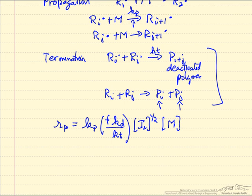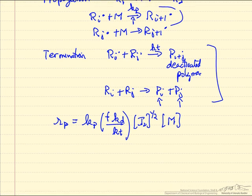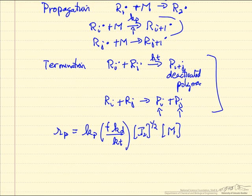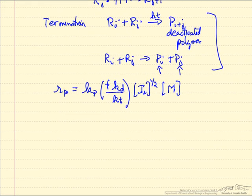Typically the propagation step is fast, and so the lifetime that one of these radicals exists before it's terminated is short. Another thing to note is when a reaction is taking place, it's much more likely that a radical reacts with a monomer, because we have a lot of monomer, a small number of concentrations of radicals, rather than the radicals terminating. But clearly they terminate to form our polymer chains.